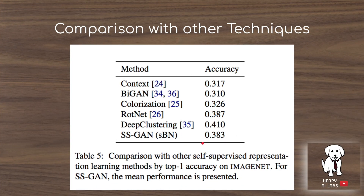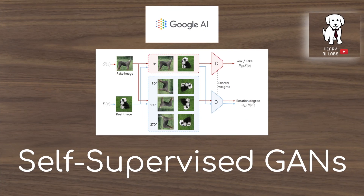This is the comparison of the self-supervised GAN with other unsupervised learning techniques. The BigGAN model was recently improved and does outperform this, but it's interesting to see all these different techniques people are developing to make use of unlabeled data for representation learning. Thanks for watching this video on self-supervised GANs — please subscribe to Henry AI Labs for more deep learning videos.